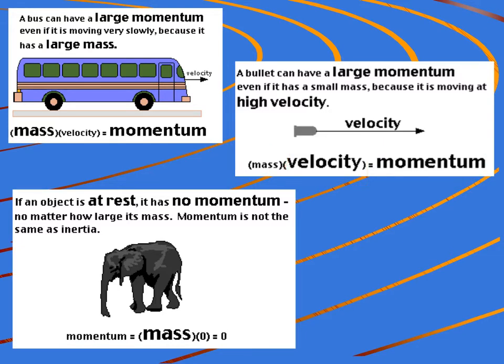Now, even though something may be huge and massive, it may have no momentum. For example, like this elephant that is at rest. Since it's not moving, velocity is zero, so therefore mass times velocity would be zero. There would be no momentum whatsoever. So, don't forget that. Big mass or big velocity, we could have big momentum, but only if the objects are moving.